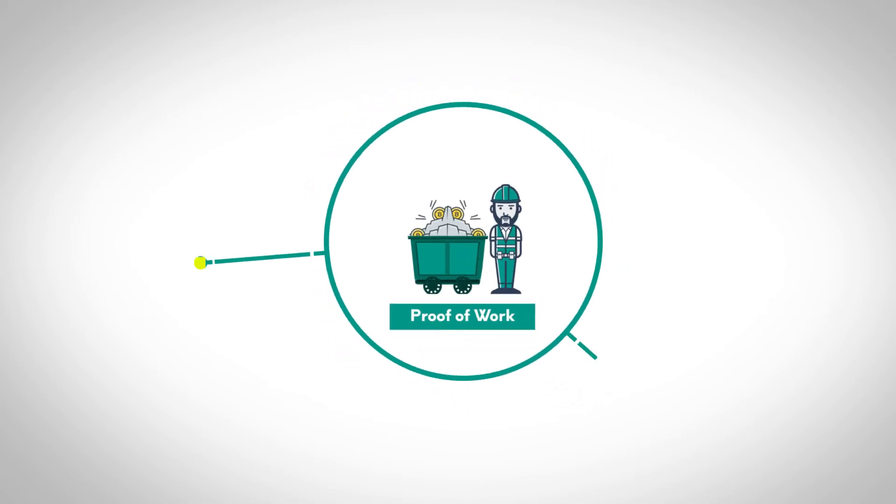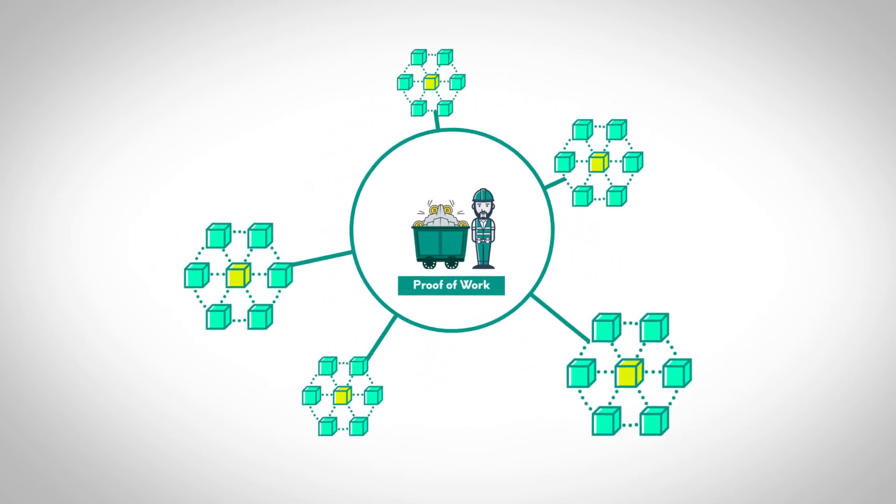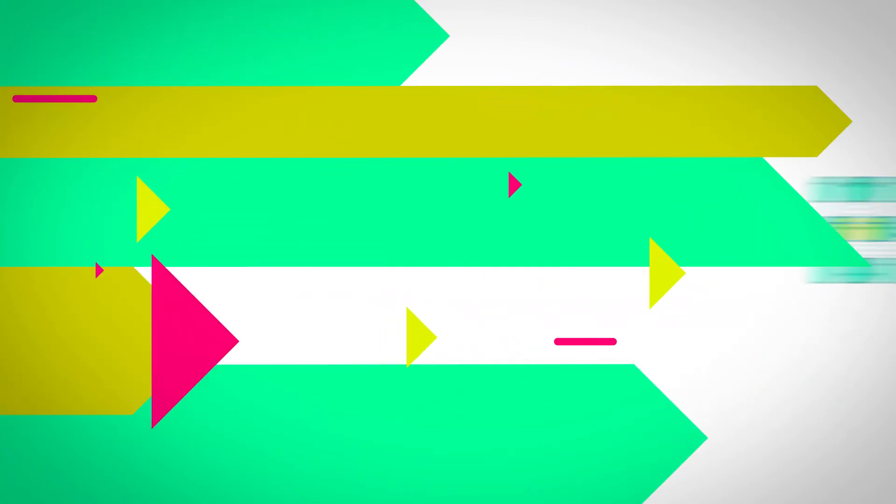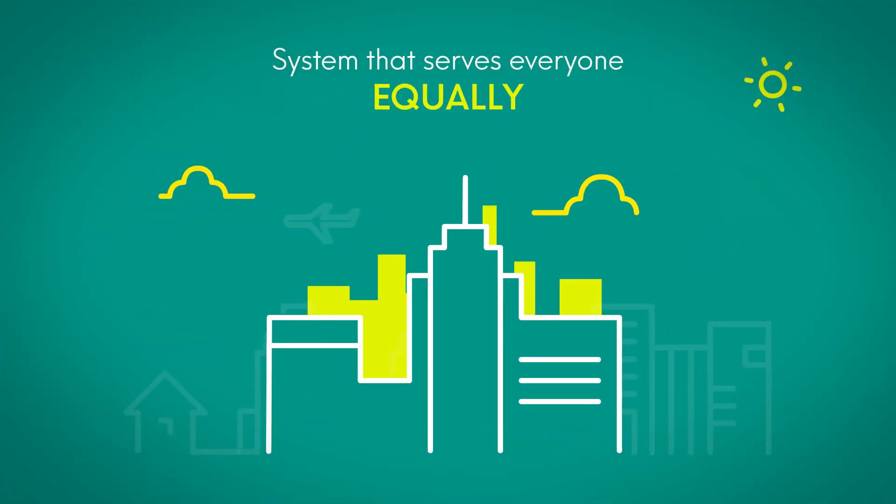Proof-of-work is the foundation of many open blockchain networks, aligning economic incentives in order to build a system that serves everyone equally.